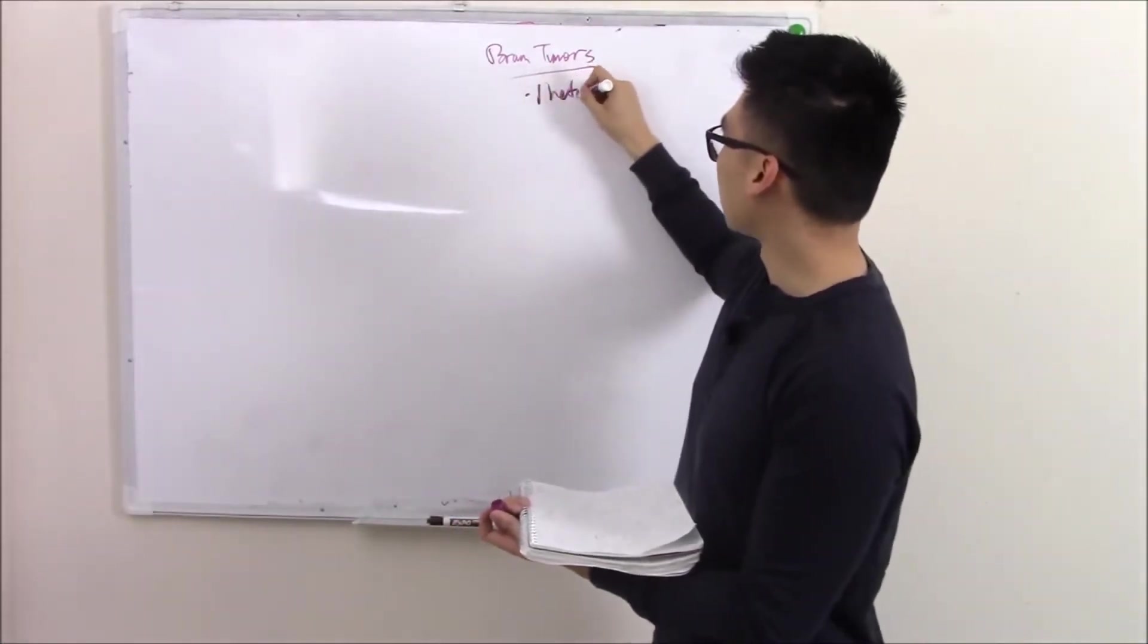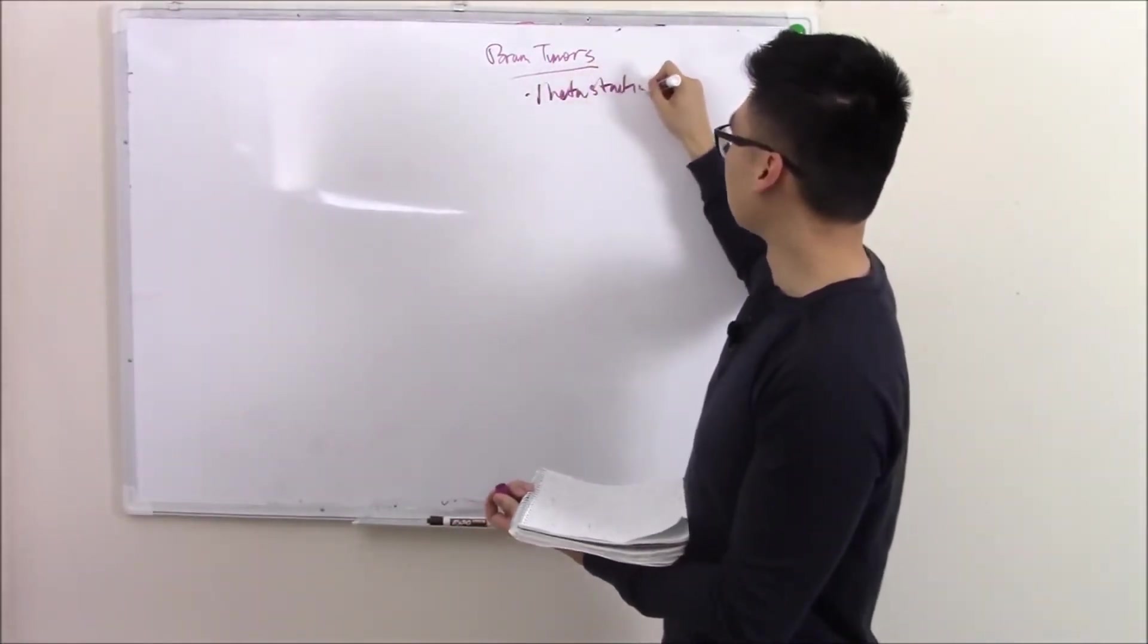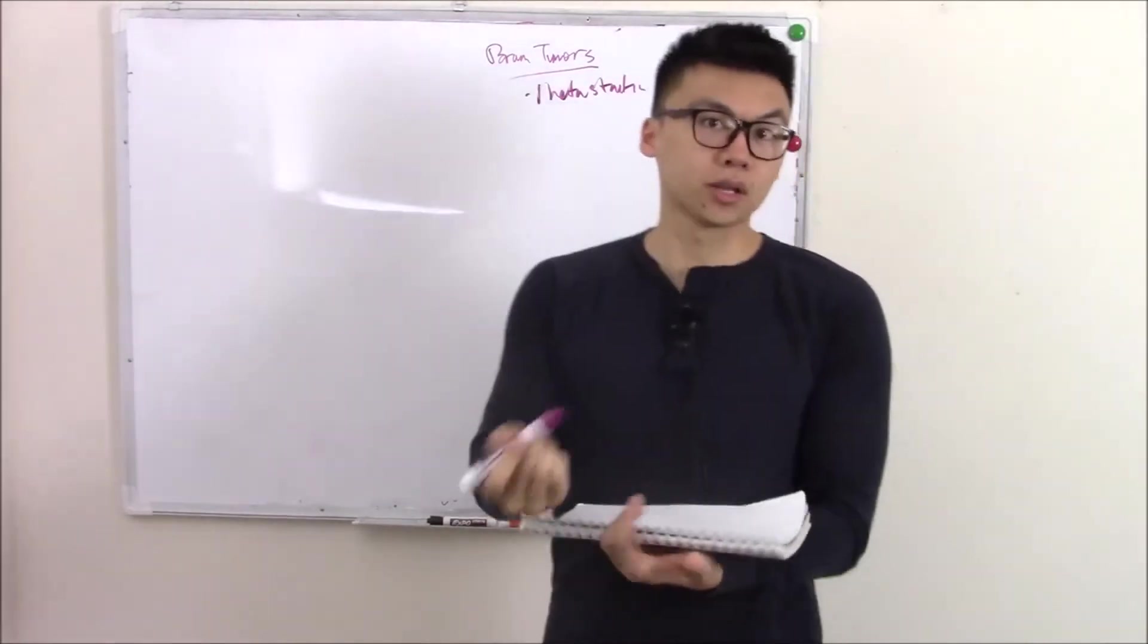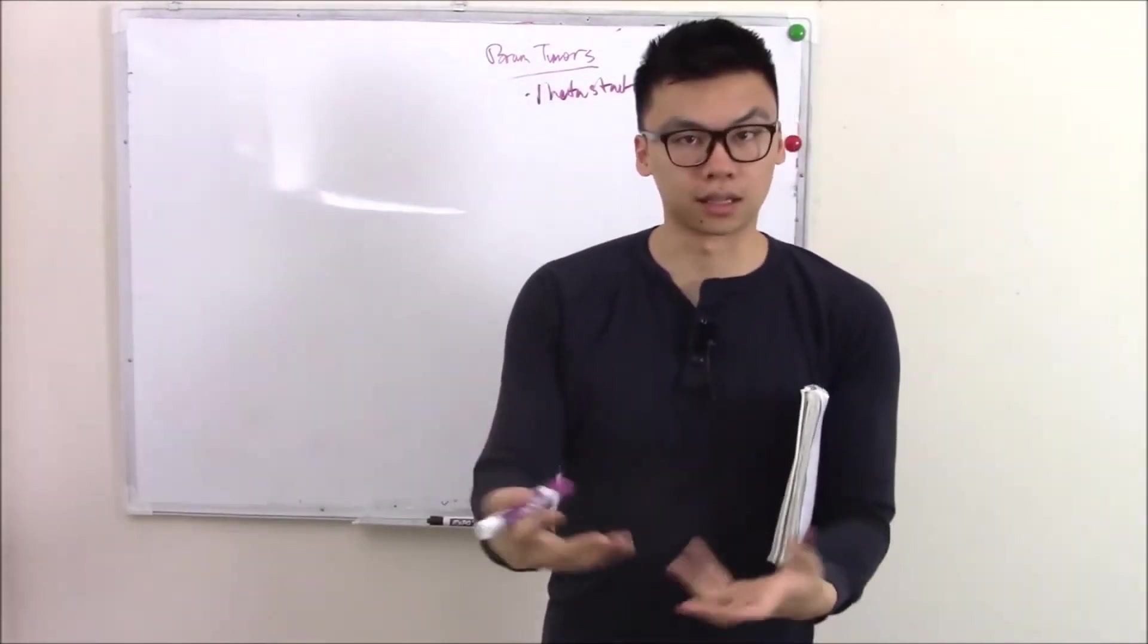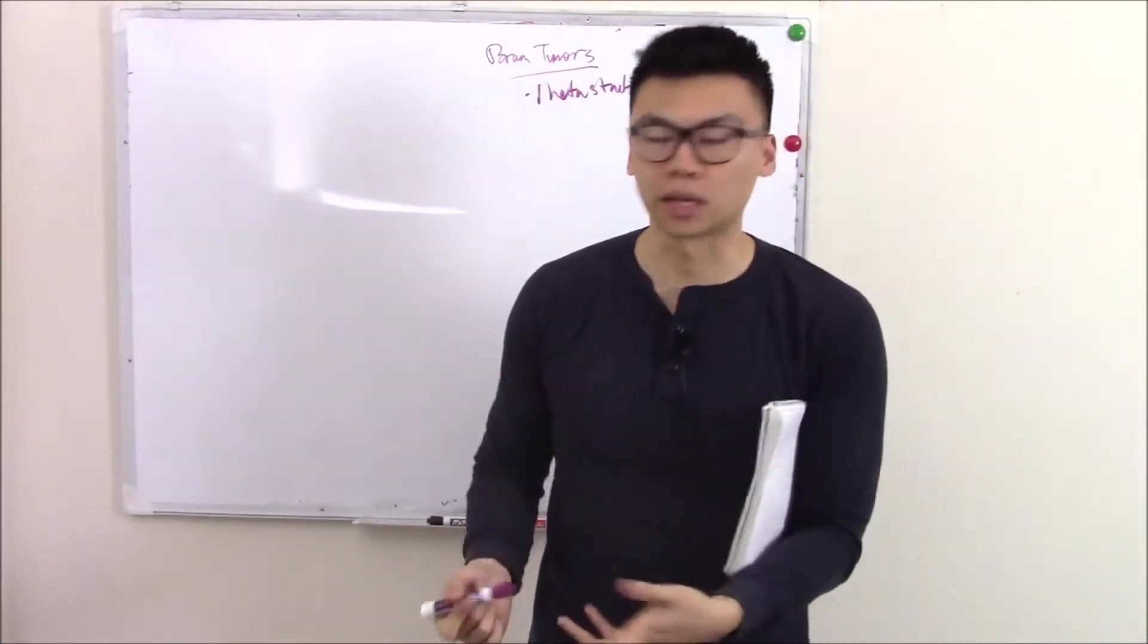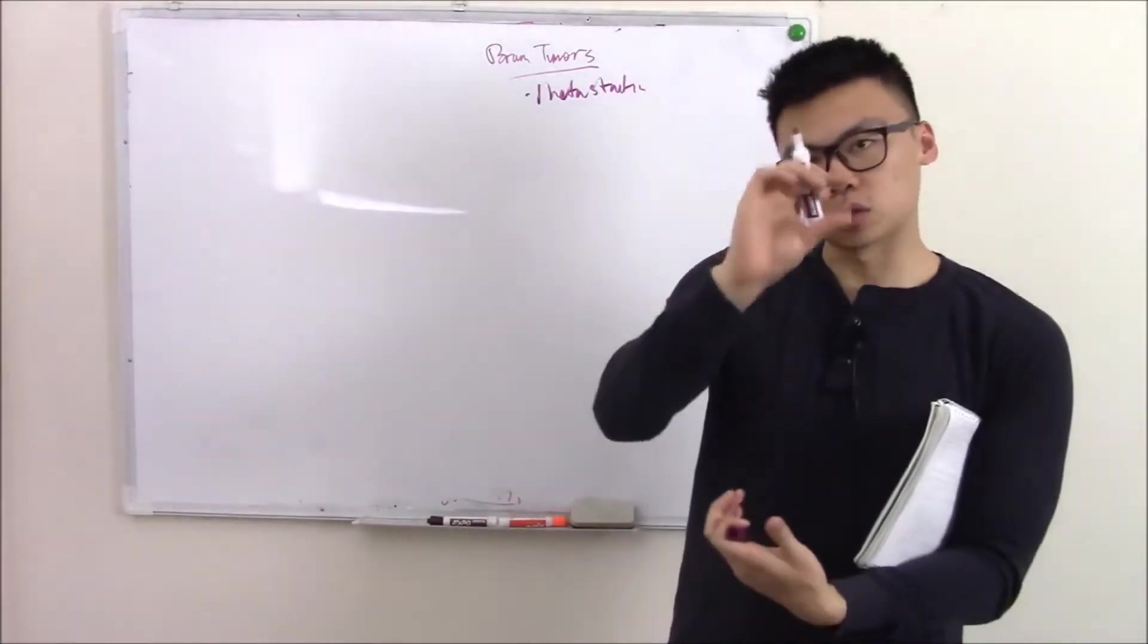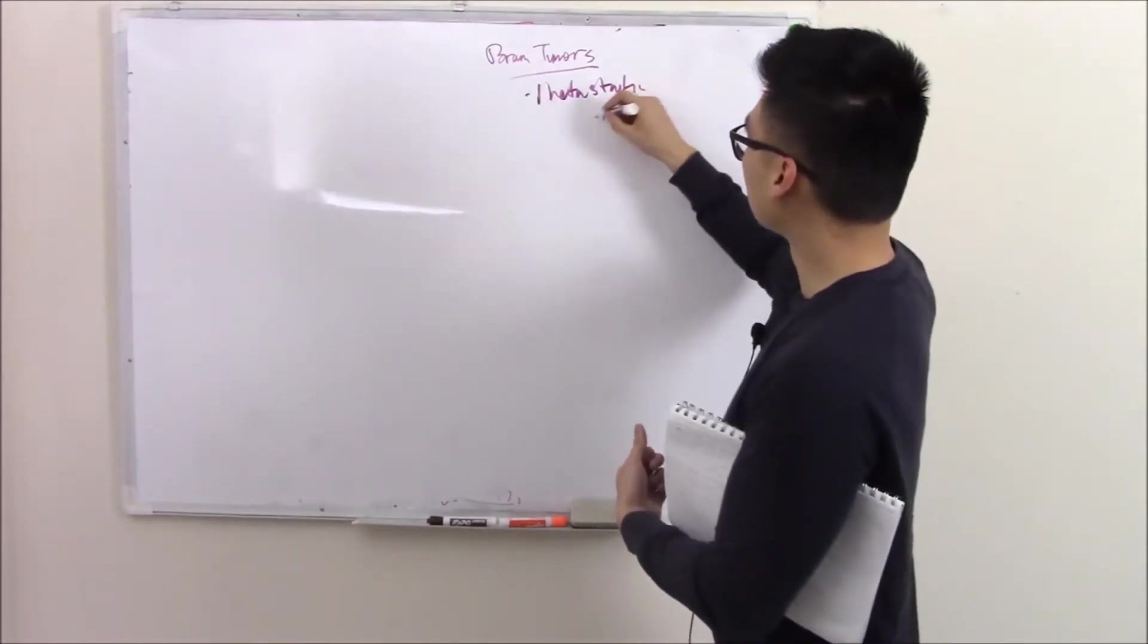Metastatic tumors, you can tell it's metastatic in the brain because there'll be multiple lesions. That's how you always tell metastatic lesions. If there's multiple lesions in the lung, it's metastatic lung cancer. Multiple lesions in the bone, metastatic bone cancer. And here's no different. So we see multiple lesions in the brain.